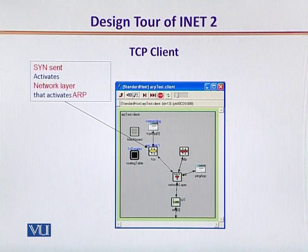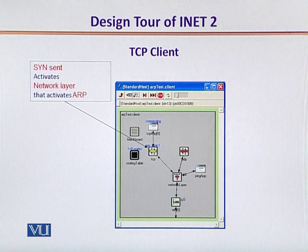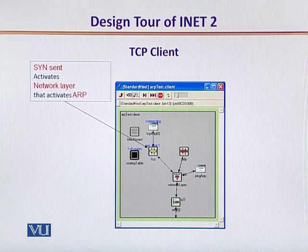When this SYN is sent at the transport layer, it activates the network layer, because a socket is opened up. The network layer subsequently activates the ARP protocol, because the data link layer would need to create a frame, and the frame would carry a destination MAC address.